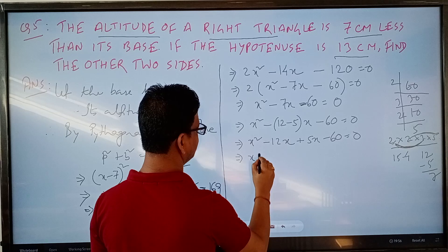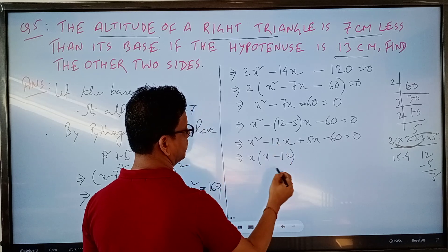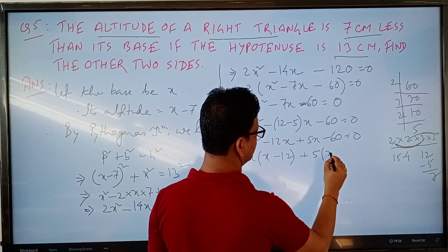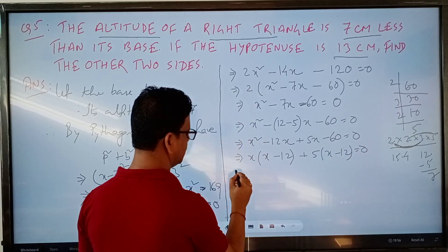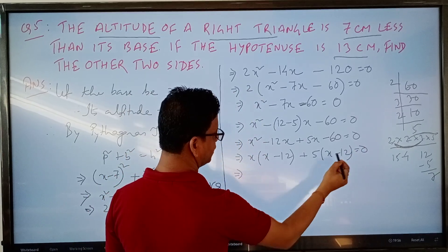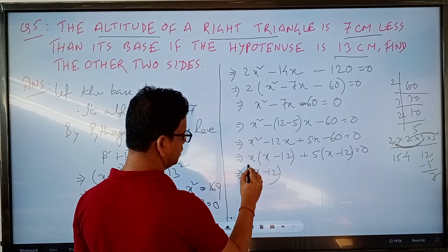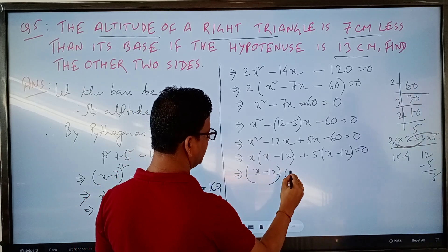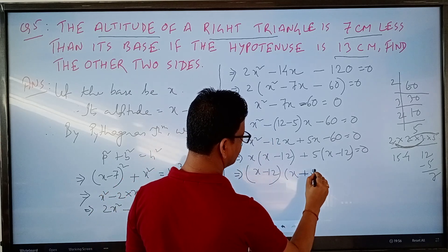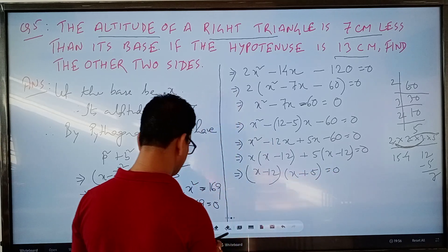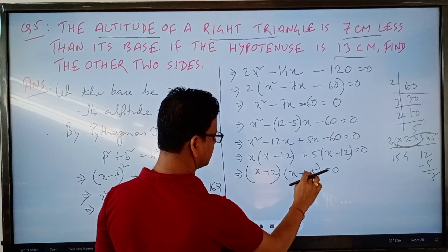Taking x common from the first two terms gives x(x minus 12), and taking 5 common from the last two terms gives 5(x minus 12). So the factored form is (x minus 12)(x plus 5) equals 0.